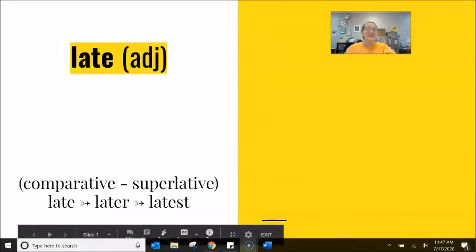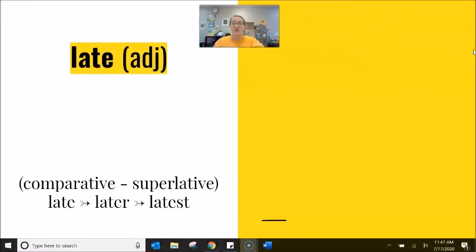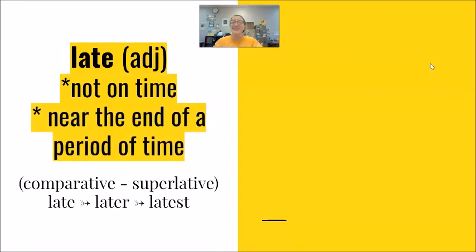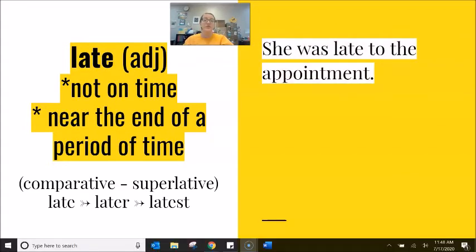The word late is usually used as an adjective to mean not on time, or to mean near the end of a period of time. The word late as an adjective could also become later or latest when we are talking about comparative — comparing two things — or superlative — comparing three or more things. For example: She was late to the appointment. She was not on time. She was late.